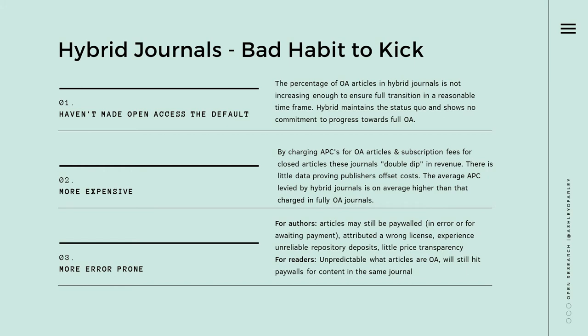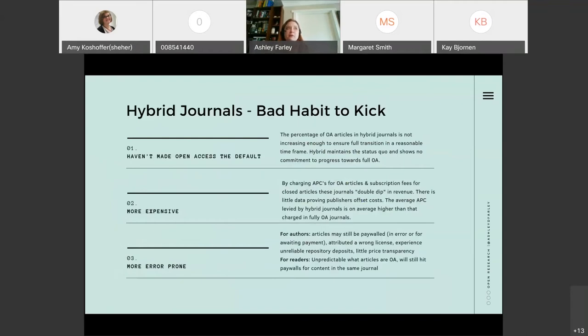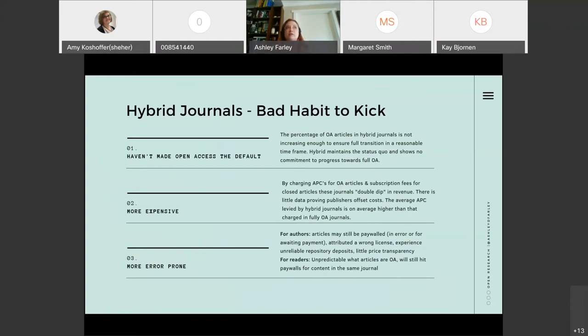Hybrid journals are a key component of Plan S, and we do not pay for hybrid journal publications anymore. We're trying to shift that model to one that is fully open. Hybrid journals collect subscriptions from institutions and also collect open access fees for publications. There's a healthy discussion on whether or not publishers typically offset those costs, and it creates a phenomenon known as double dipping.